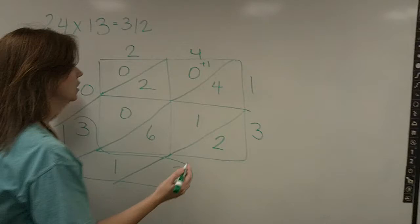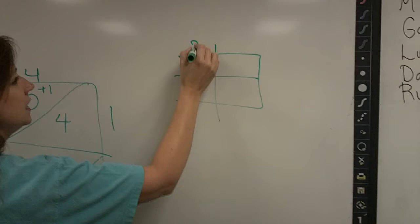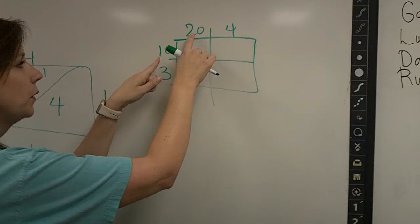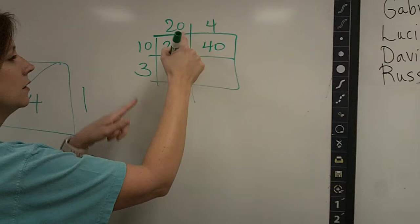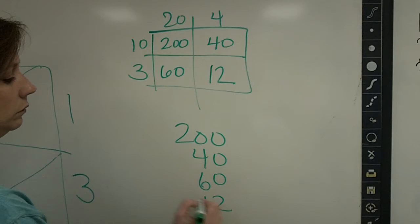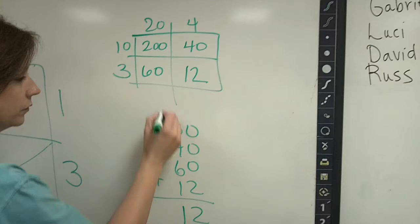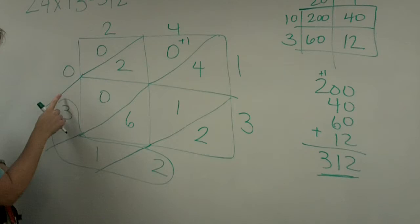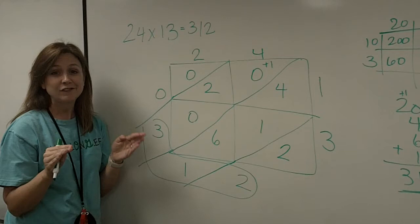Now, let me prove it to you using something the students will know, box method. So, if we come over here, and we make a box, and we do 20 and 4 and 10 and 3, and we multiply 20 times 10 is 200, 4 times 10 is 40, 20 times 3 is 60, 4 times 3 is 12. Then, of course, we have to add all of those together. We have a 2, 6, 10, 11. 2 plus 1 is 3. Look at there. 312. We have 312 here. 312 there.